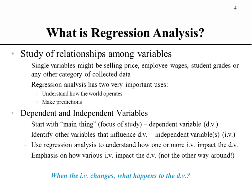We need to get more refined in discussing variables and understand that in regression and in much of statistics there are two kinds of variables: the dependent variable and the independent variable. When we start an analysis there is usually one main thing we're trying to study — like cancer, income, or distance traveled. That main thing is labeled the dependent variable, and all other things that impact it are considered independent variables.